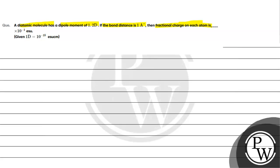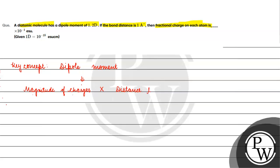The key concept for this question is dipole moment. Dipole moment is basically a product of the magnitude of charges and the distance between the charges — written as μ = q × d.